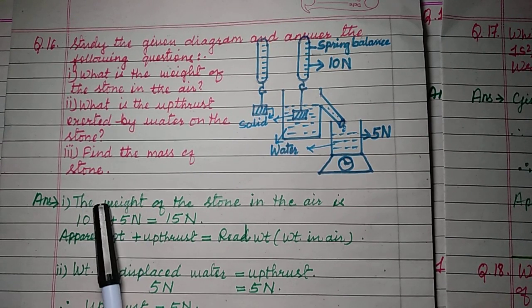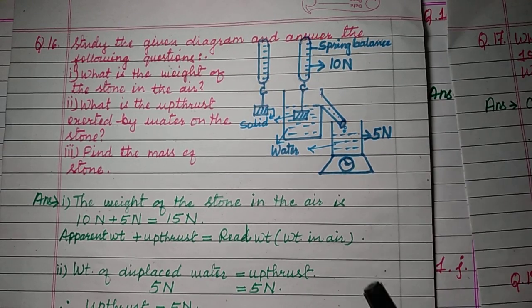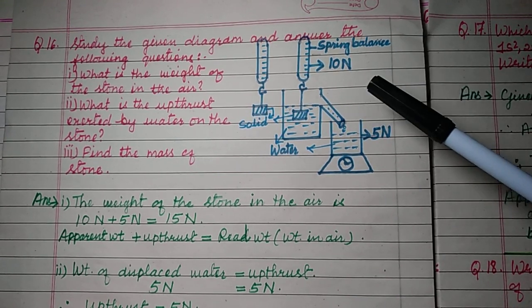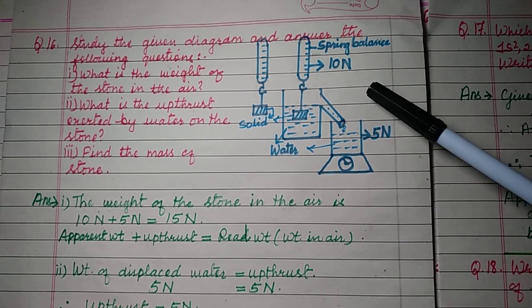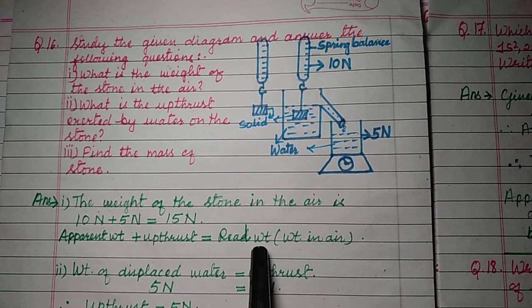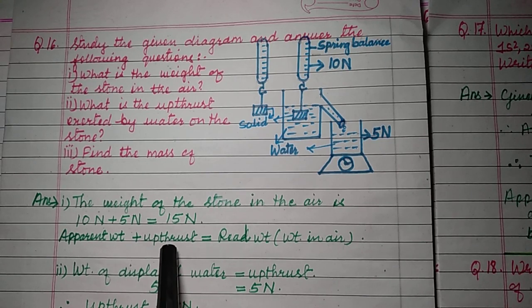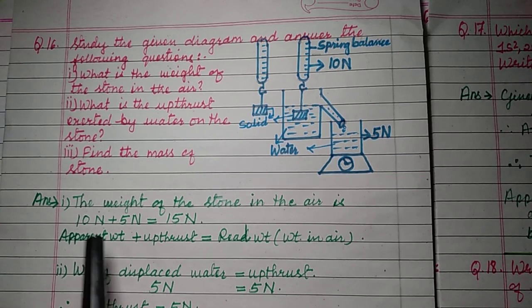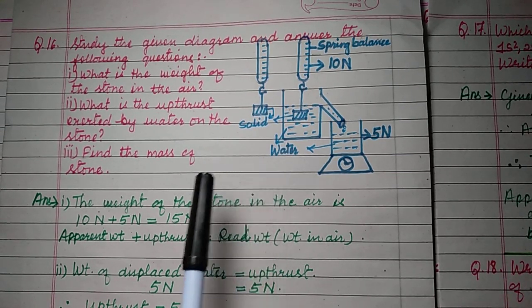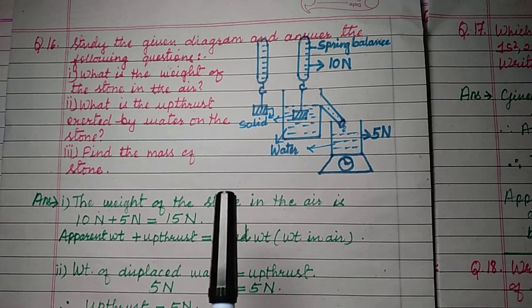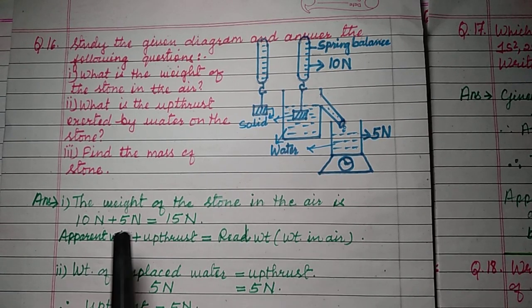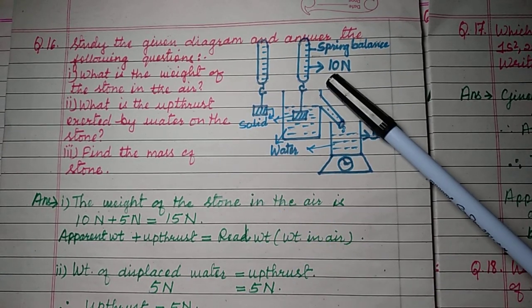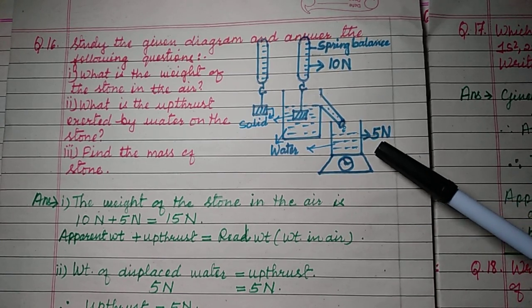Question one: what is the weight of the stone in the air? The weight of the stone in air is the real weight. According to the formula, real weight equals apparent weight plus upthrust. Apparent weight means the weight measured when the solid is placed in liquid — this is the false weight. In our case, the apparent weight is 10 newton and the upthrust is 5 newton.